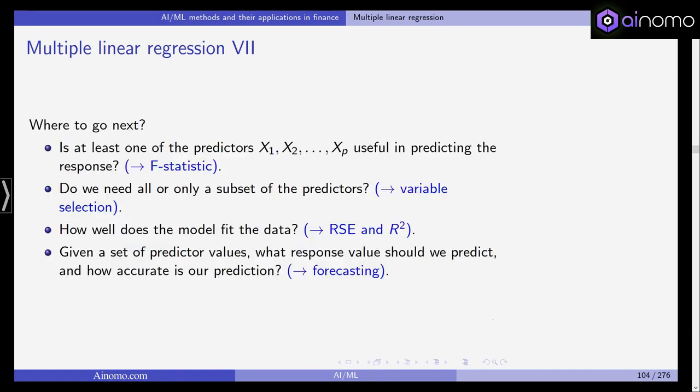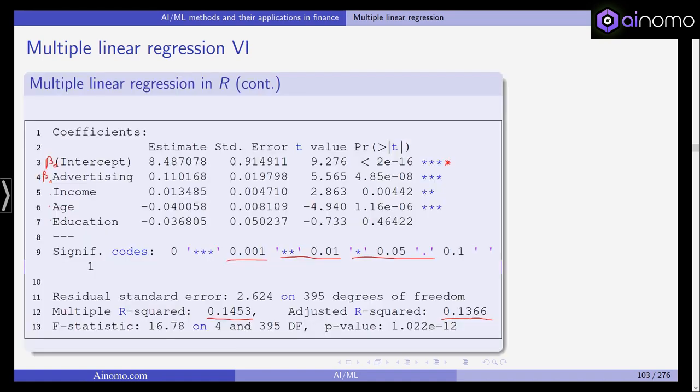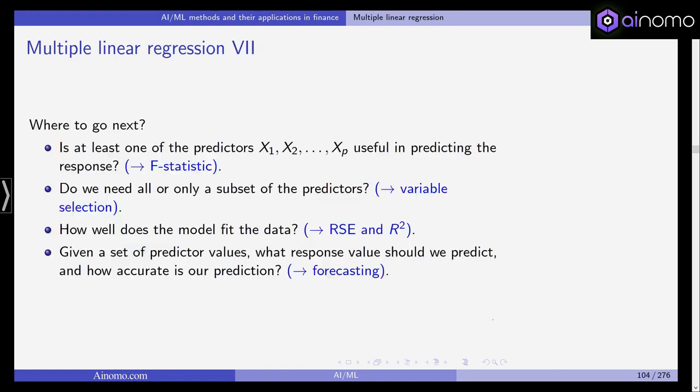Where should we go next? We should check: is at least one of the predictors useful in predicting the response? You've already seen from the R output it seems 3 out of 4 predictors are significantly different from 0. We can use the F statistic for this question. Then we have to decide: do we need all or only a subset of the predictors? This is variable selection. How well does the model fit the data? We look at RSE and R squared. And given a set of predictor values, what response value should we predict and how accurate is our prediction? This is forecasting.